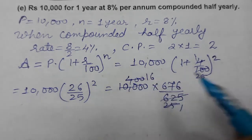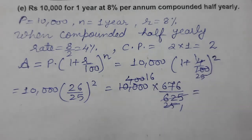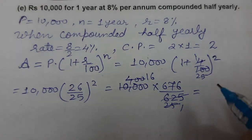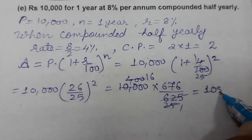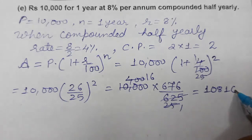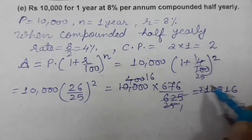Now multiply 676 into 16, so we get 10,816. So this is the amount. Now we need to find the compound interest also.